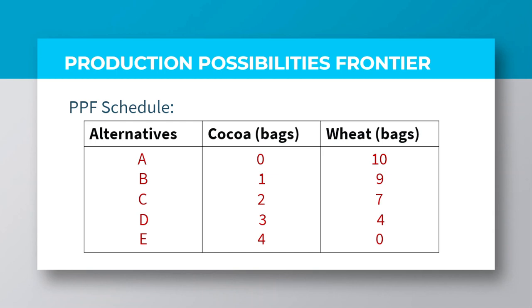You can take it from the other way around. If the country dedicates all its resources and technology into producing cocoa, that country is able to produce four bags of cocoa and no wheat. If the country decides to produce at alternative C, where the bags of wheat are seven, the country is only able to produce two bags of cocoa. Comparing it to alternative E, where the country originally produces four bags, at C the country sacrifices two bags of cocoa to achieve that production target.